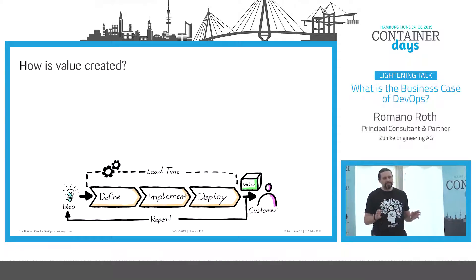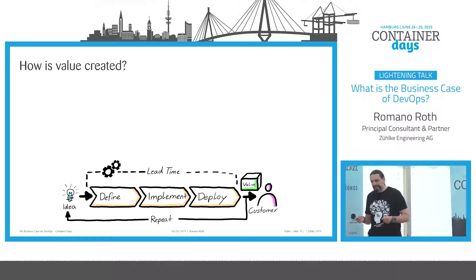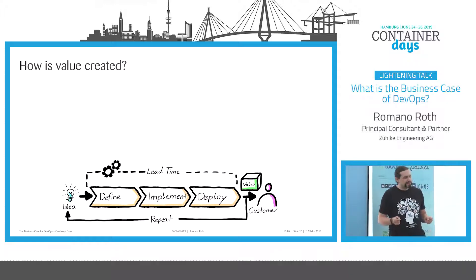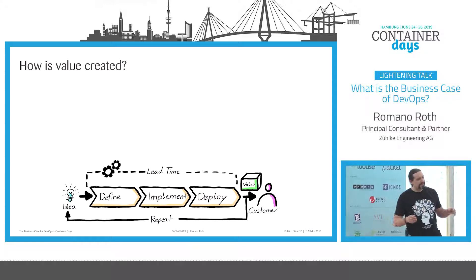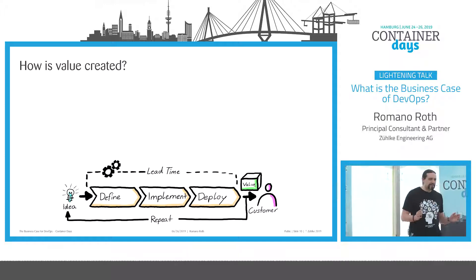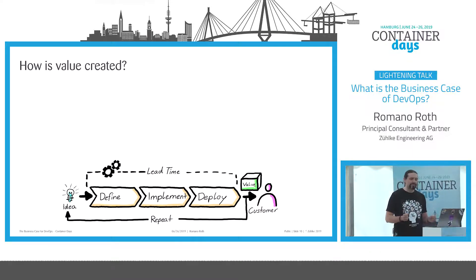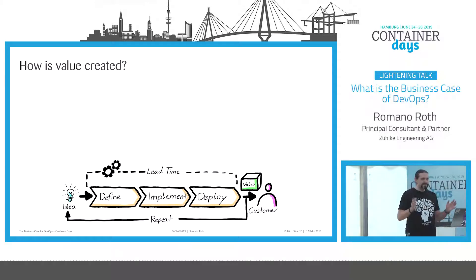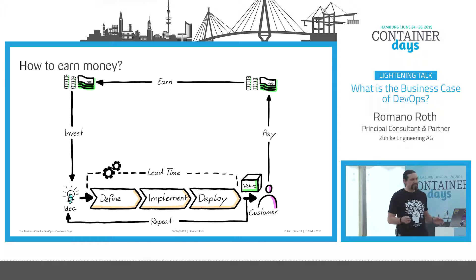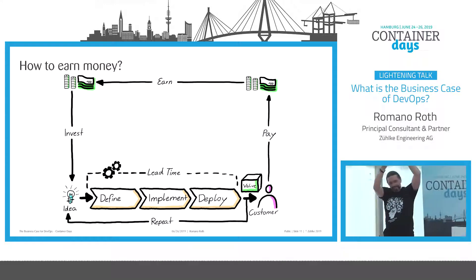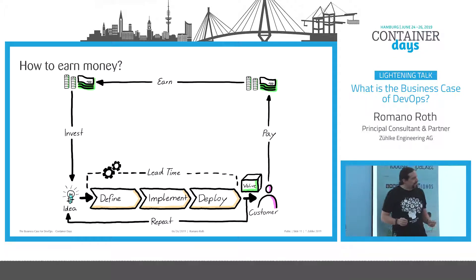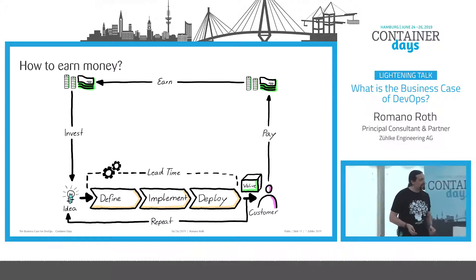It is crucial to understand where value is generated. We have a value chain which starts with an idea. Then we define this idea in a user story, implement it, and deploy it until it reaches the customer when we release the feature or the product. During the whole value chain, no value is generated. Only when the feature or product is at the customer side is value generated. It is essential that you understand that.